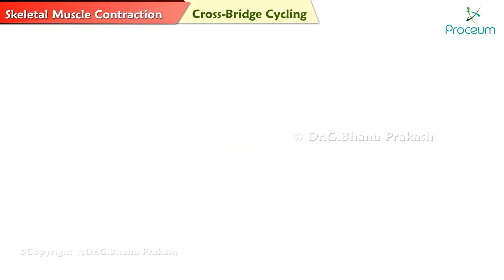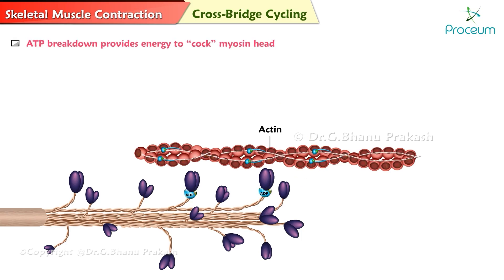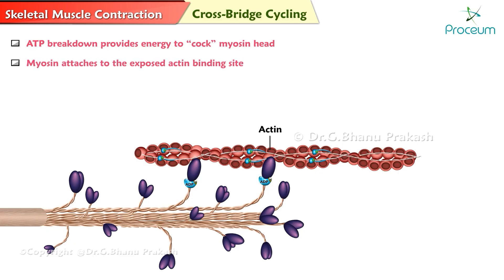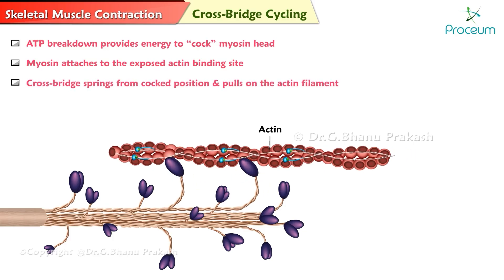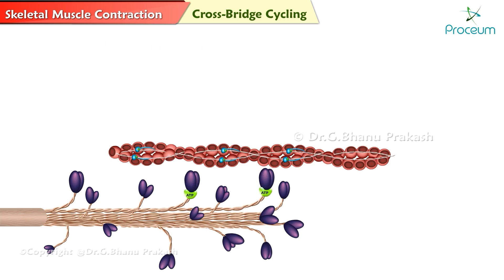Cross-bridge cycling. When calcium ions are present, the myosin binding sites on actin are exposed. ATP breakdown provides energy to cock the myosin head. The cocked myosin attaches to the exposed actin binding site — cross-bridge attaches. The cross-bridge springs from the cocked position and pulls on the actin filament. The cross-bridges break; an ATP binds to the cross-bridge but is not yet broken down, and the myosin heads are released from actin. As long as calcium ions are present, this continues until the muscle fiber is fully contracted.